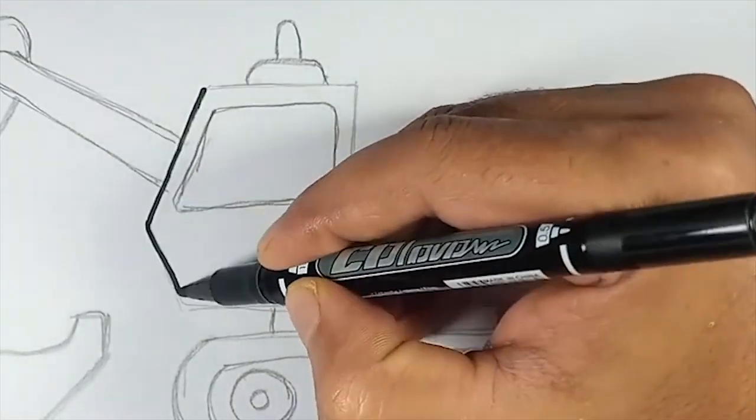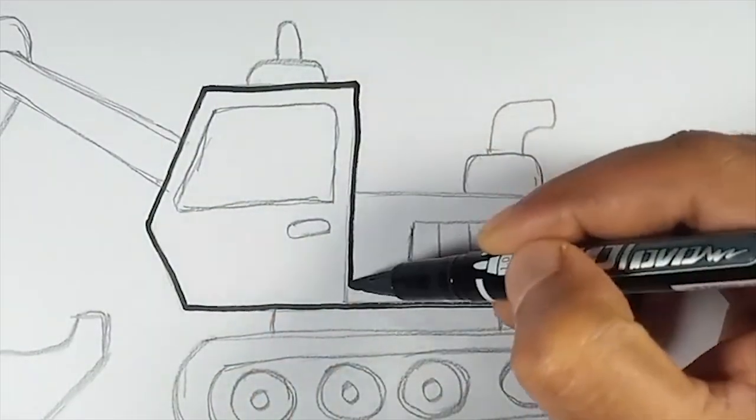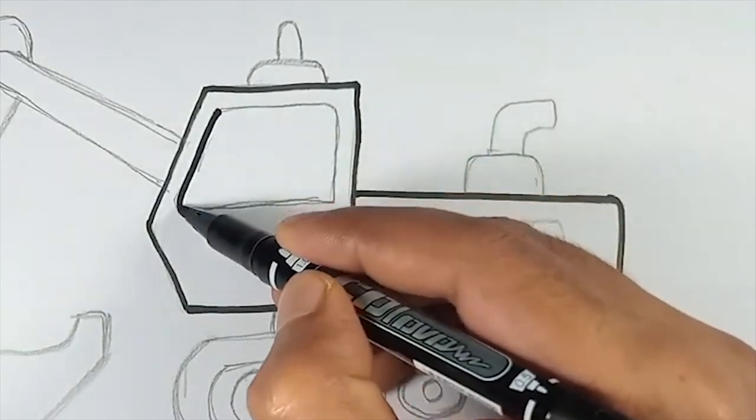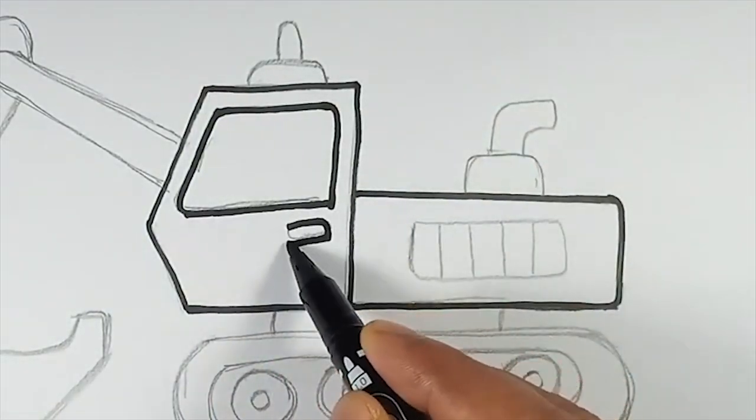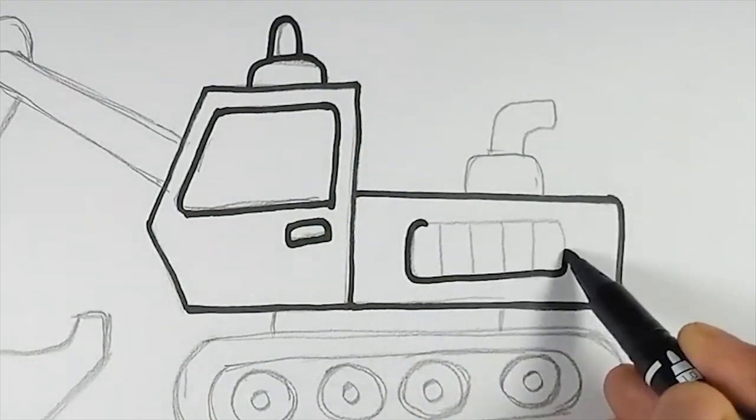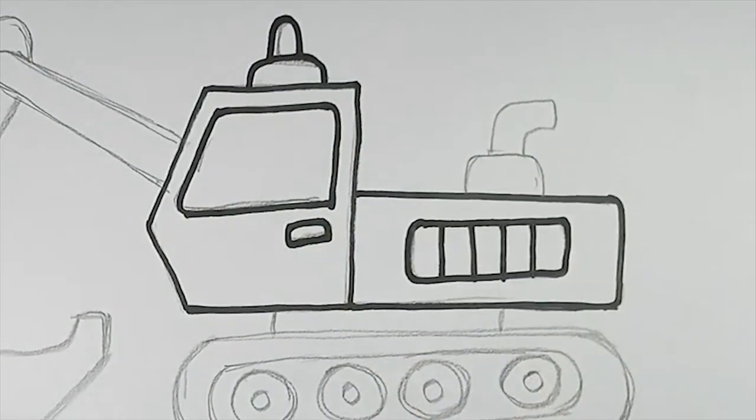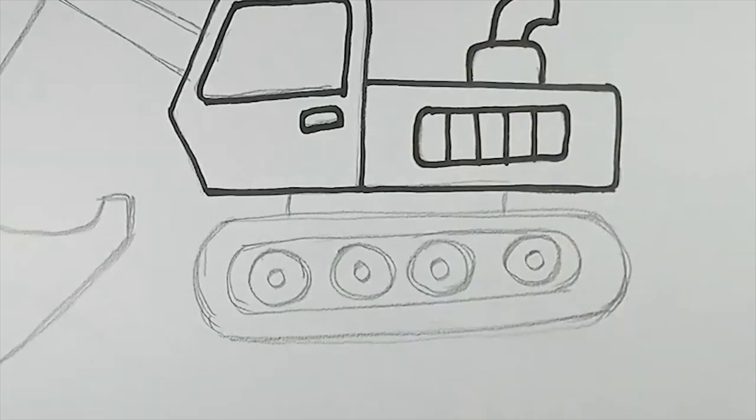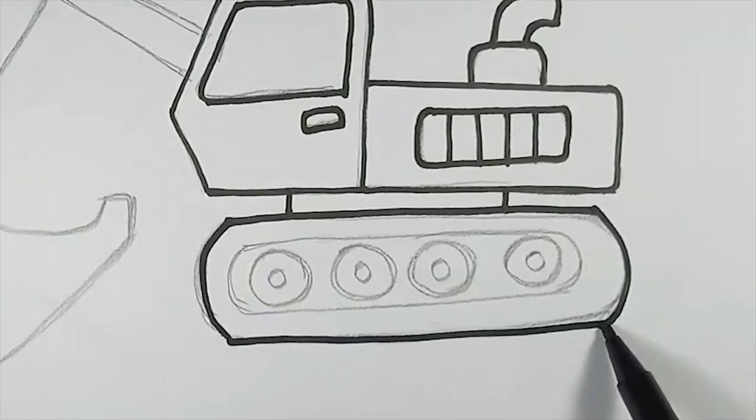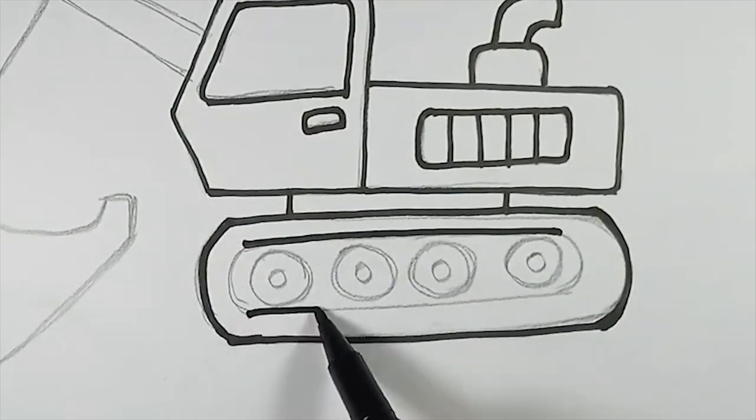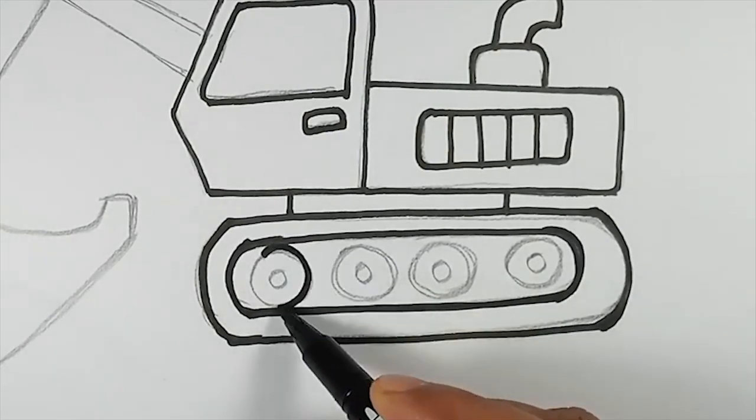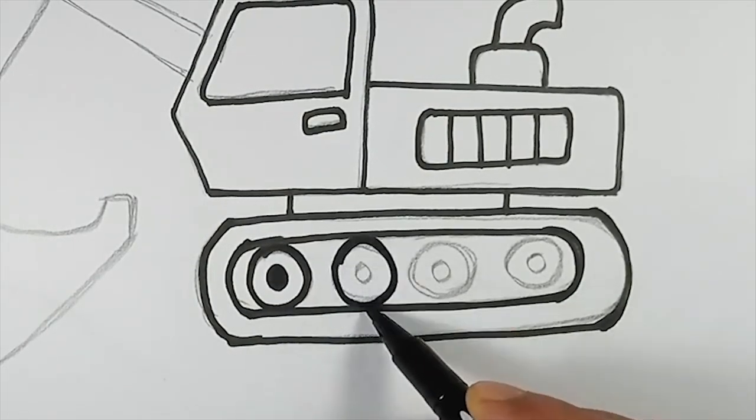Now, use your black marker to outline your drawing. This will make your excavator stand out and look super cool. The black lines will define all the details, making it look just like the real thing.